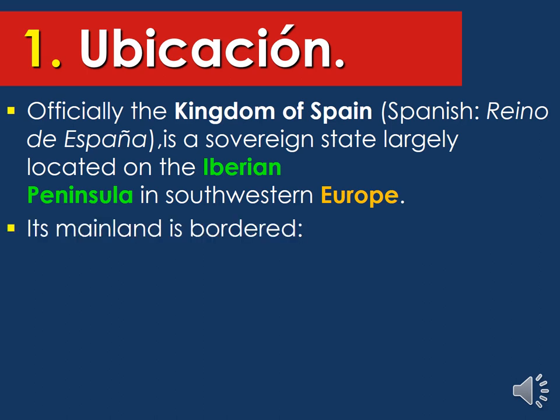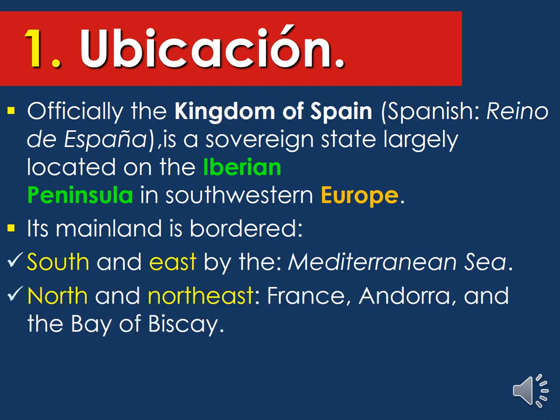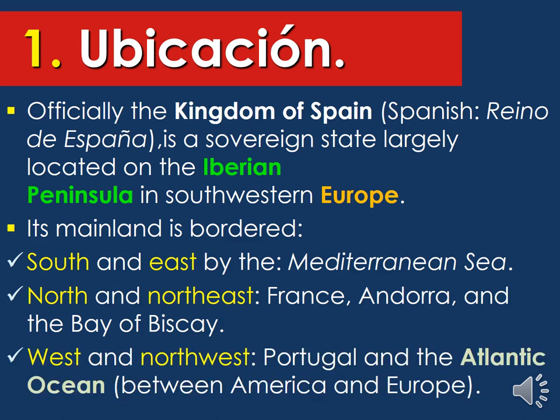Now we're going to be discussing the mainland. Spain is located on the European continent. On the south and east, they have the Mediterranean Sea. On the north and northeast, they have France, Andorra, and the Bay of Biscay. On the west and northwest, they have Portugal and the Atlantic Ocean. Something important to remember about the Atlantic Ocean is that this is the ocean you need to cross in order to get from Europe to America — it is the main ocean dividing those two continents.